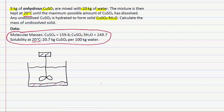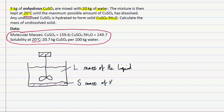Now we know what the process actually looks like, we need to define our unknowns. In this case, there are two unknowns. We don't know L, which is the mass of the liquid — a solution of copper sulfate dissolved in water. And we also don't know what we'll call S, which is the mass of the undissolved solid. The question is asking us to find the mass of the undissolved solid, which we've defined as S.